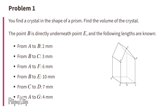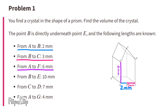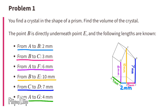Point B is directly underneath point E, and the following lengths are known: A to B is 2 millimeters, B to C is 3 millimeters, A to F is 6 millimeters, B to E is 10 millimeters, C to D is 7 millimeters, and A to G is 4 millimeters.